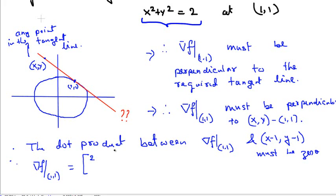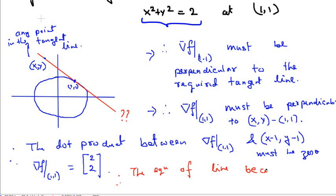Evaluating the derivative of f with respect to y gives us 2y. Evaluating 2y at x=1 and y=1 gives us 2. Therefore, the equation of the tangent line becomes 2(x − 1) + 2(y − 1) = 0.